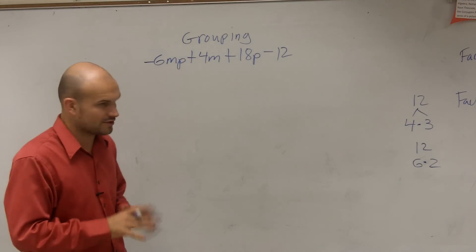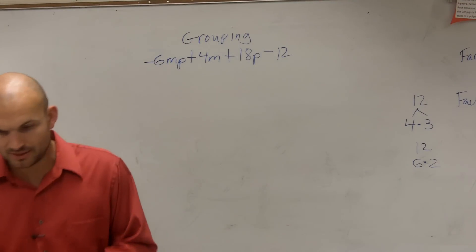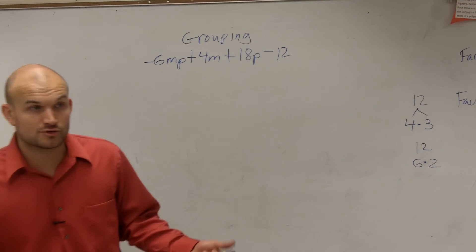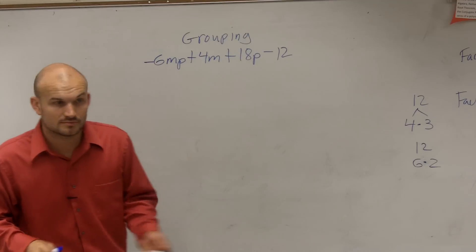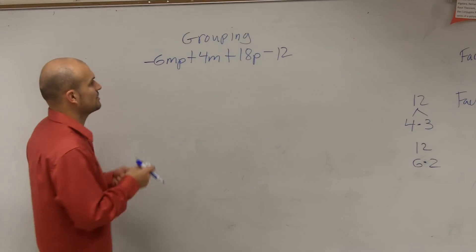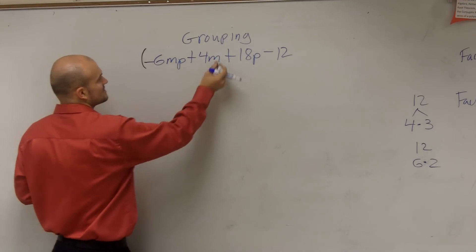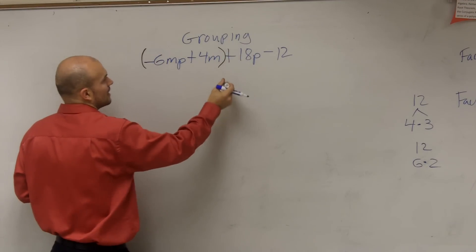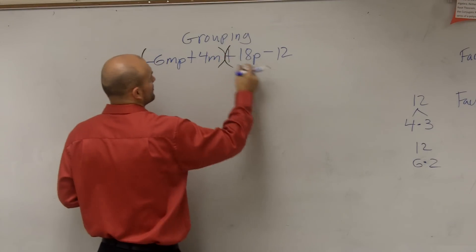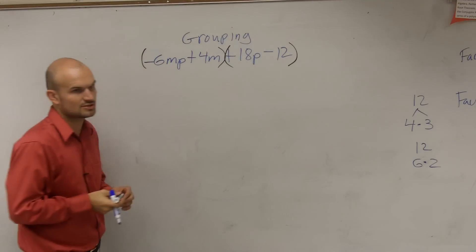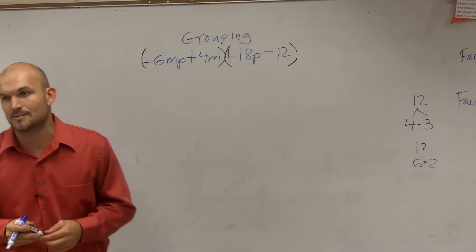So what you guys are going to do to factor by grouping is — you know how to factor out two terms. What you're going to do is take parentheses and just put parentheses to break it up, so you can do two at a time.